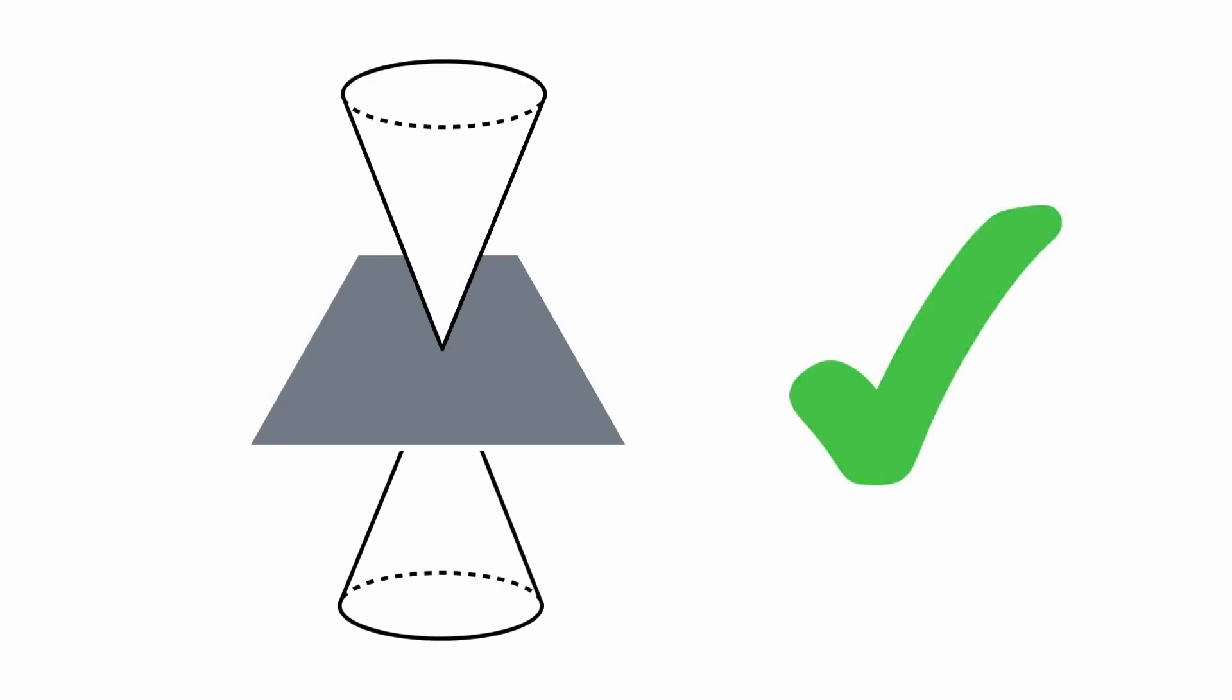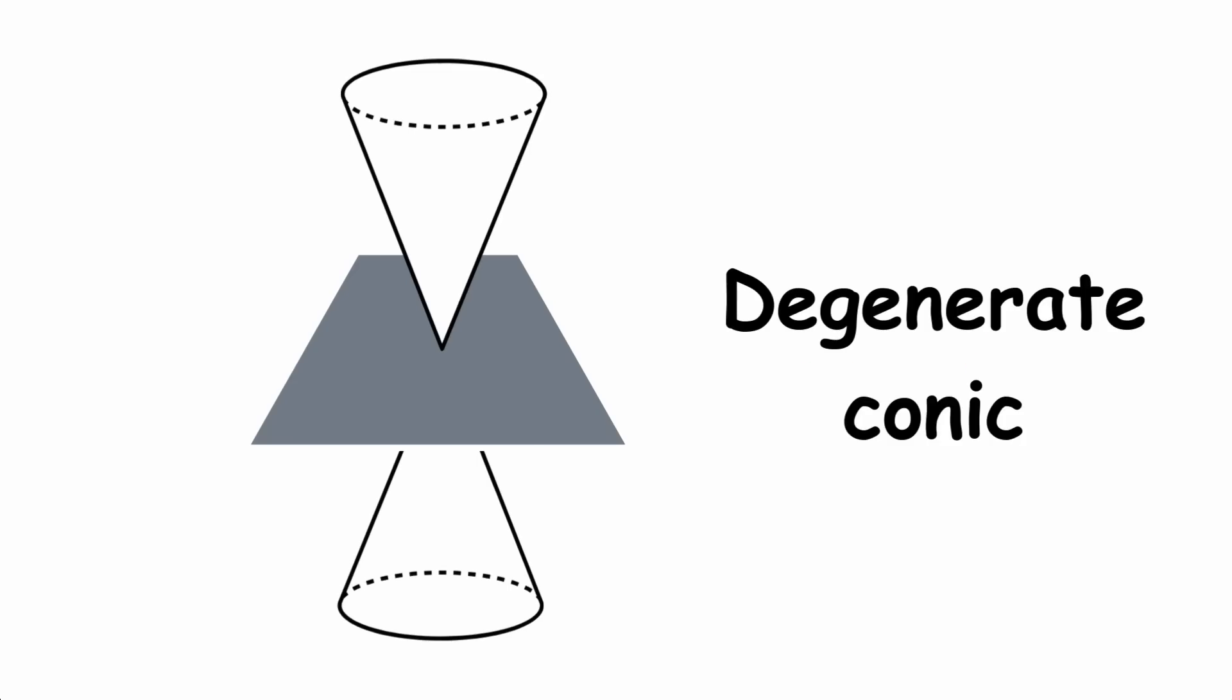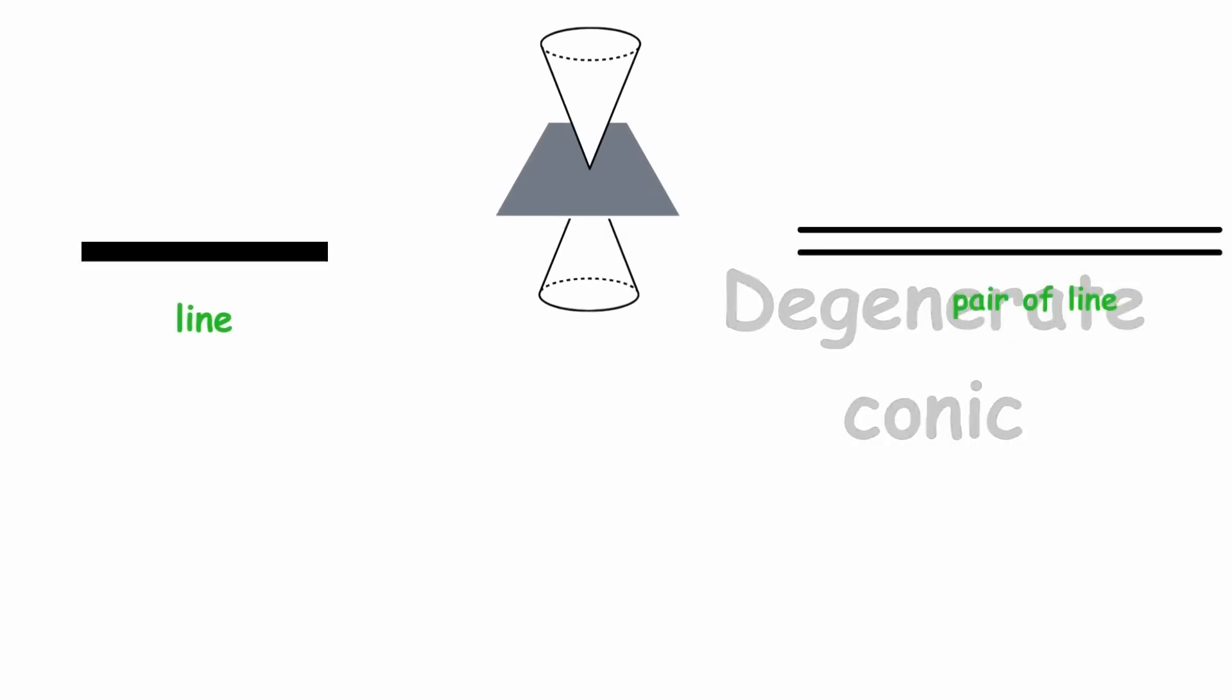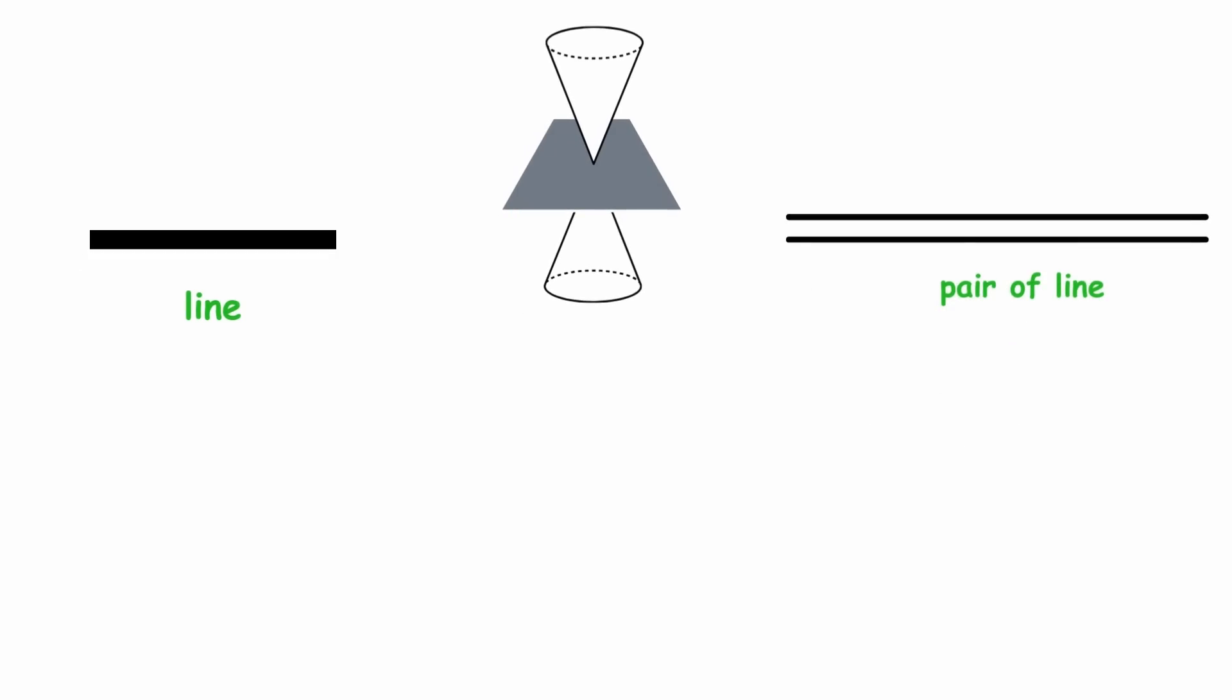If we do allow the plane to pass through the vertex, we get a conic known as a degenerate conic. This can be a point, a line, or a pair of lines. The lines in question can be either parallel or intersecting.